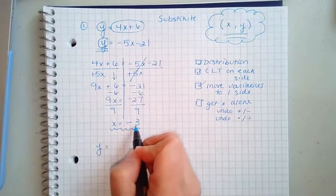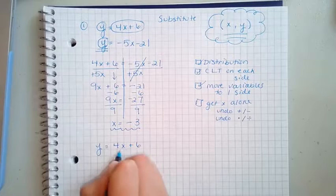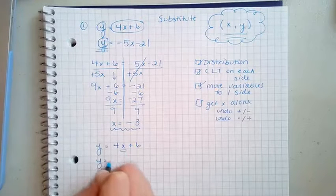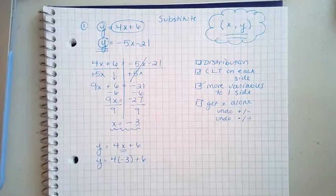And where there's an X in it, I'm gonna write negative 3. So here's the equation. Right there, instead of writing X, I'm gonna write negative 3.